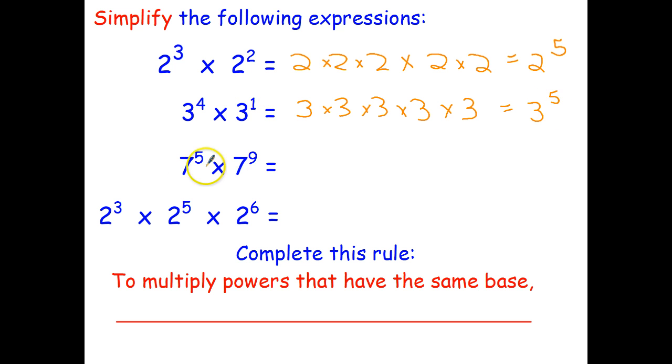So what do you reckon the answer to this one is without expanding? Well I've got 5 sevens multiplied together. I've got 9 sevens multiplied together. In total I'm going to have 5 plus 9 sevens multiplied together. And that gives us 14 sevens multiplied together. So there's a little shortcut.